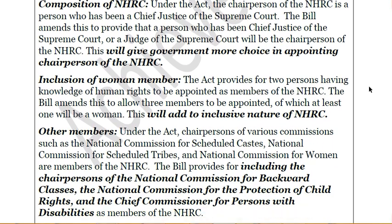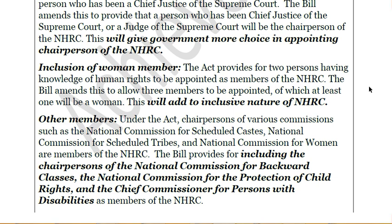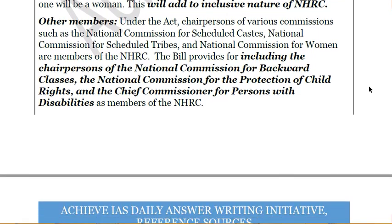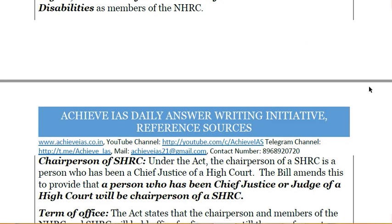Another amendment concerns ex-officio members. Under the 1993 Act, the chairpersons of the National Commission for Scheduled Castes, Scheduled Tribes, and Women were ex-officio members of the NHRC. Now this has been expanded to include the National Commission for Backward Classes, the National Commission for Protection of Child Rights, and the Chief Commissioner for Persons with Disabilities. This adds to the inclusive nature, as representation is no longer limited only to SCs, STs, and Women, but also to backward classes, child rights, and persons with disabilities.